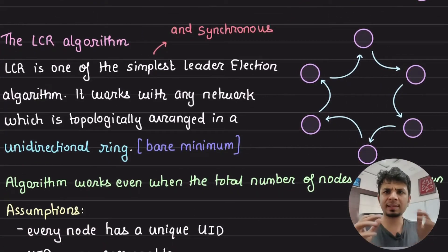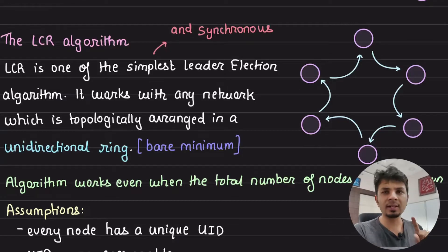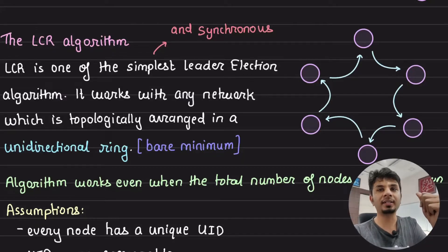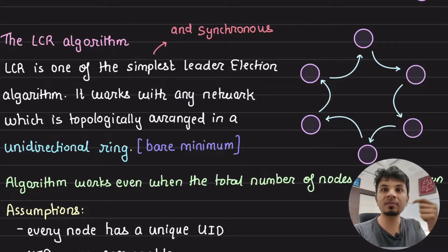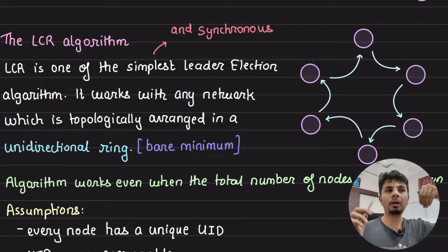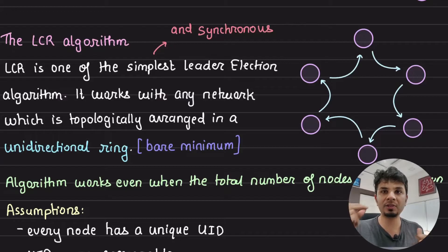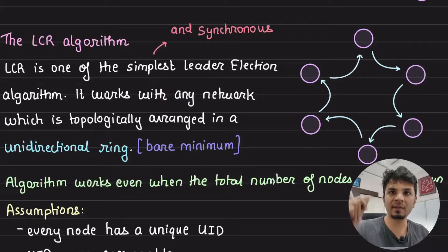LCR is one of the simplest algorithms you could think about, but it's very effective. This algorithm works in a synchronous mode, meaning every node participating in this election would know that now the election is starting. It's not that nodes are pitching in their votes at their own time. This starts and ends synchronously — everyone knows it's the first step, second step, third step, and everyone is participating.